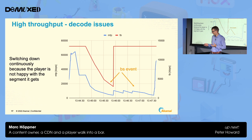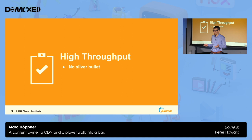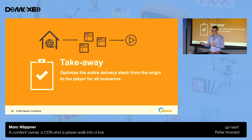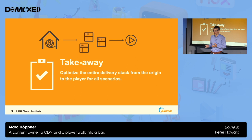For the high throughput case, unfortunately there is no silver bullet. But my key takeaway is: do not think about the media delivery ecosystem as individual components. Don't just pick a player, arbitrarily choose a CDN, and add an encoder, assuming they'll work together. It's the interplay between the encoder, the CDN, and the player that creates a great streaming experience. Thank you.